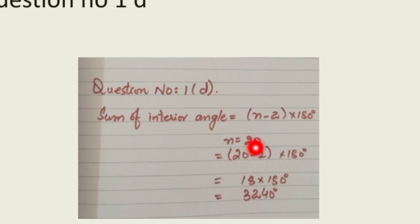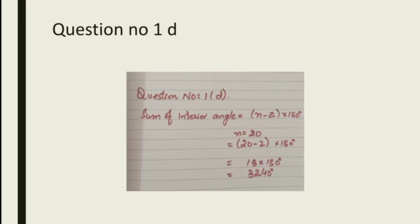N is equal to 20, which is given in the question. 20 minus 2 is equal to 18. 18 multiplied by 180 is equal to 3240 degrees. The sum of the interior angles of 20 gons is equal to 3240 degrees.